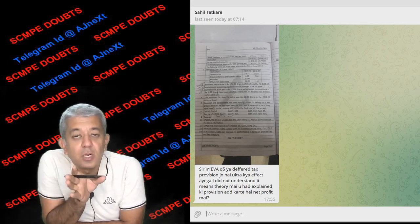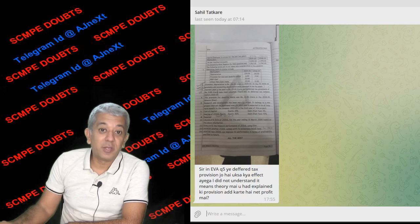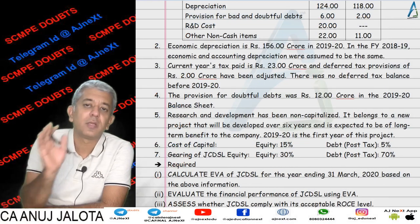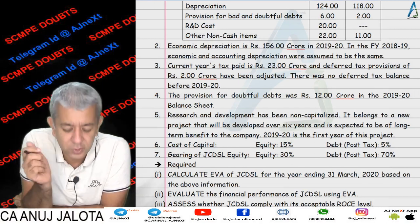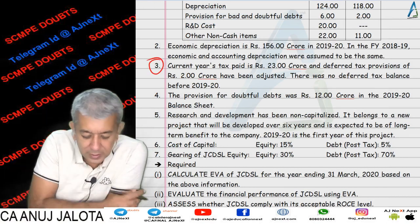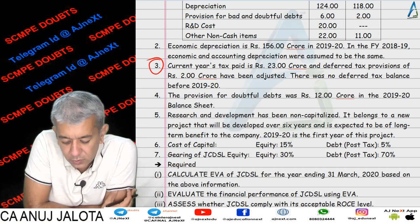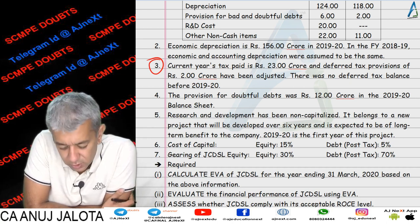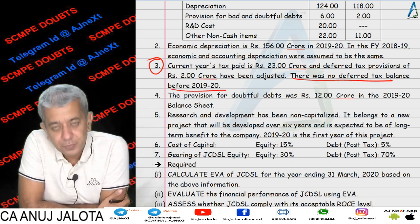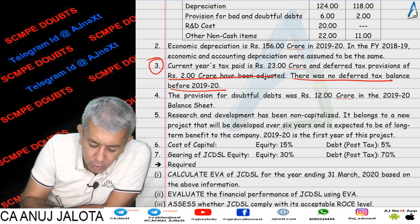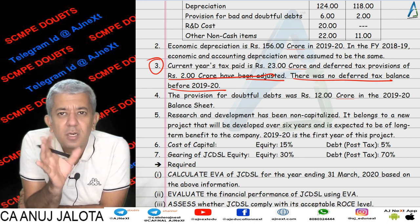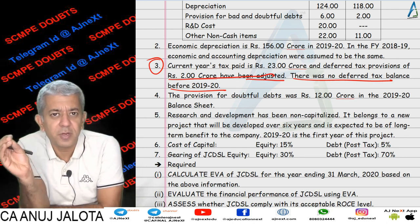Welcome to SMP Doubt. This is a doubt on a topic called Economic Value Added, submitted by Sahil. Sahil asks this particular question — one of the best questions we've had for EVA. His doubt pertained to adjustment number 3: current year's tax paid is 23 crores and deferred tax provisions of 2 crores have been adjusted. There was no deferred tax balance before 2019-20. His doubt was: why have we not taken this 2 crores rupees when calculating adjusted net operating profit after tax?